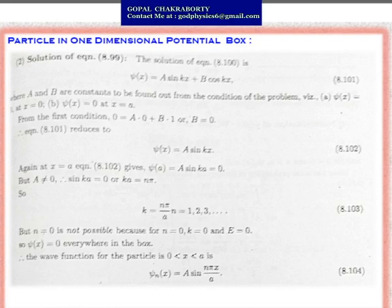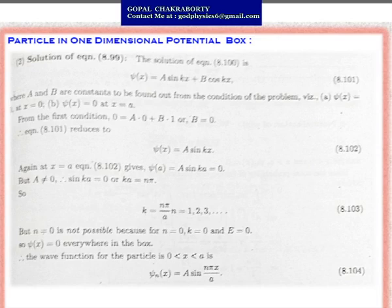The solution of this one-dimensional time-independent Schrodinger equation can be written as ψ(x) = A sin(kx) + B cos(kx). This is the general solution of d²ψ/dx² + k²ψ = 0. This solution contains two unknown constants, A and B, and to find the ultimate solution for ψ, we must determine these constants using boundary conditions.